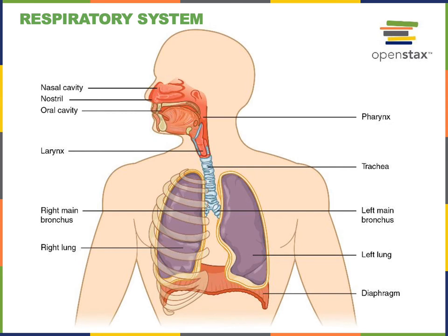Oxygen moves from the atmospheric air inside the alveoli into the blood to be transported inside the red blood cells. The diaphragm contracts in order to increase the volume of the thoracic cavity where the lungs are located. As that volume increases, there is a decrease in pressure inside the lungs that causes air to flow in, increasing the volume of the lungs.